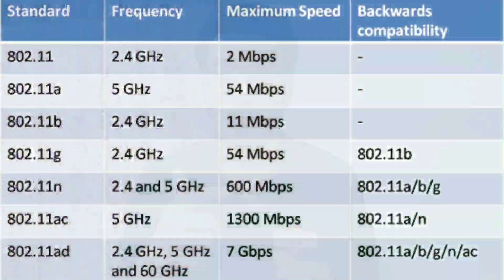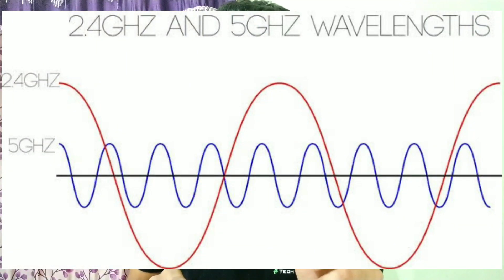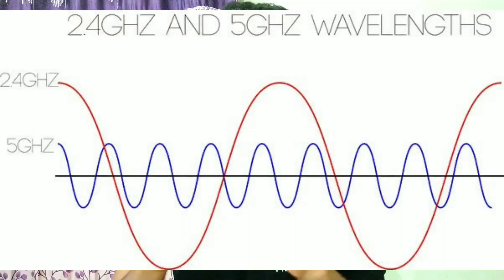Friends, these bands are decided by ISM — ISM means Industrial, Scientific, and Medical bands. I'm going to talk about 2.4 GHz and 5 GHz. For 2.4 GHz, the frequency waves are lower.